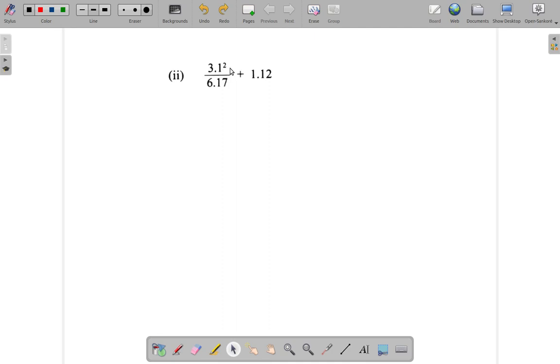It says using a calculator, so we're going to use a calculator. But just before we go to the calculator, let's take a look at this. What does 3.1 squared mean? It is 3.1 multiplied by 3.1—that's what it means.